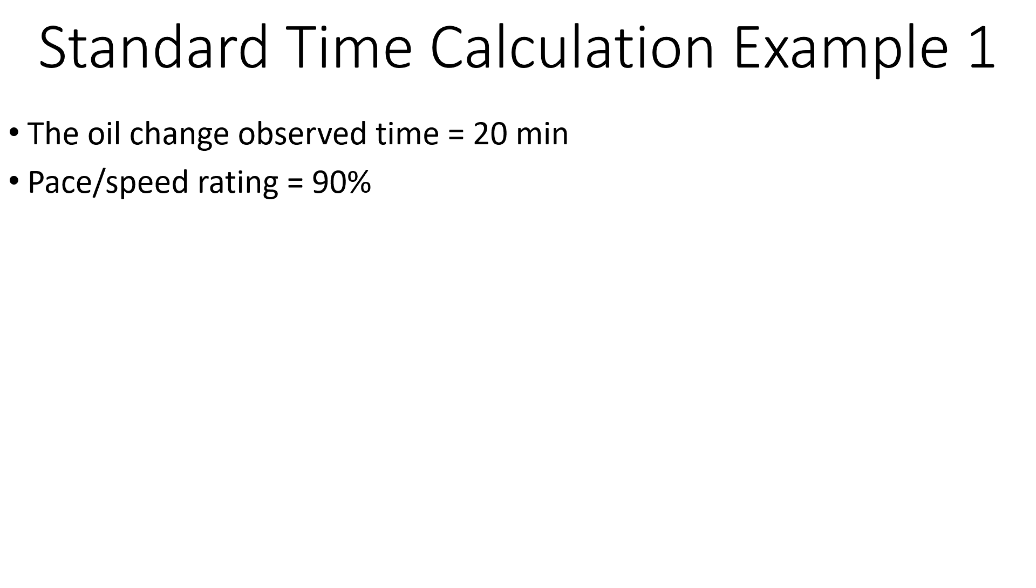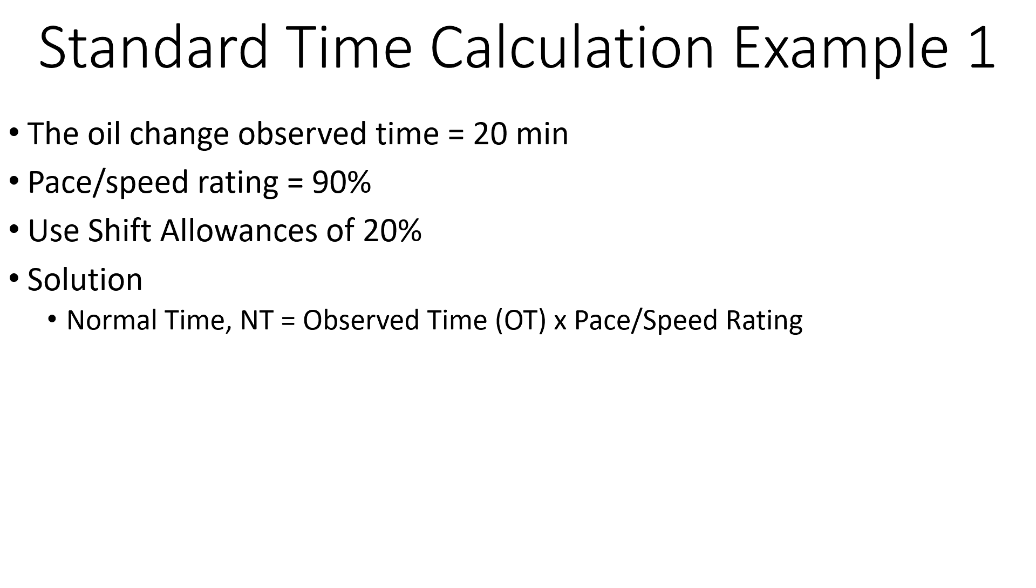Then we have to adjust for the pace rating and allowances. I have a separate video on how to determine pace rating and allowances, check that video. So the first calculation is to determine the normal time from the observed time, which is simply multiplying by the pace rating. If we do that, we get about 18 minutes.